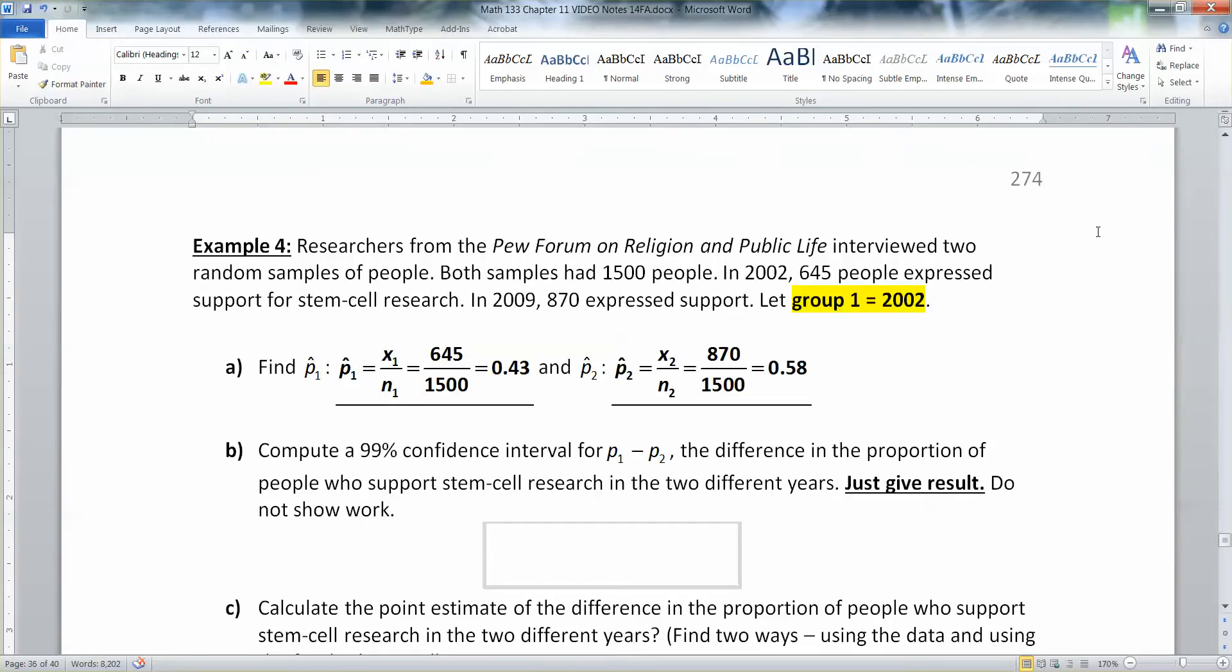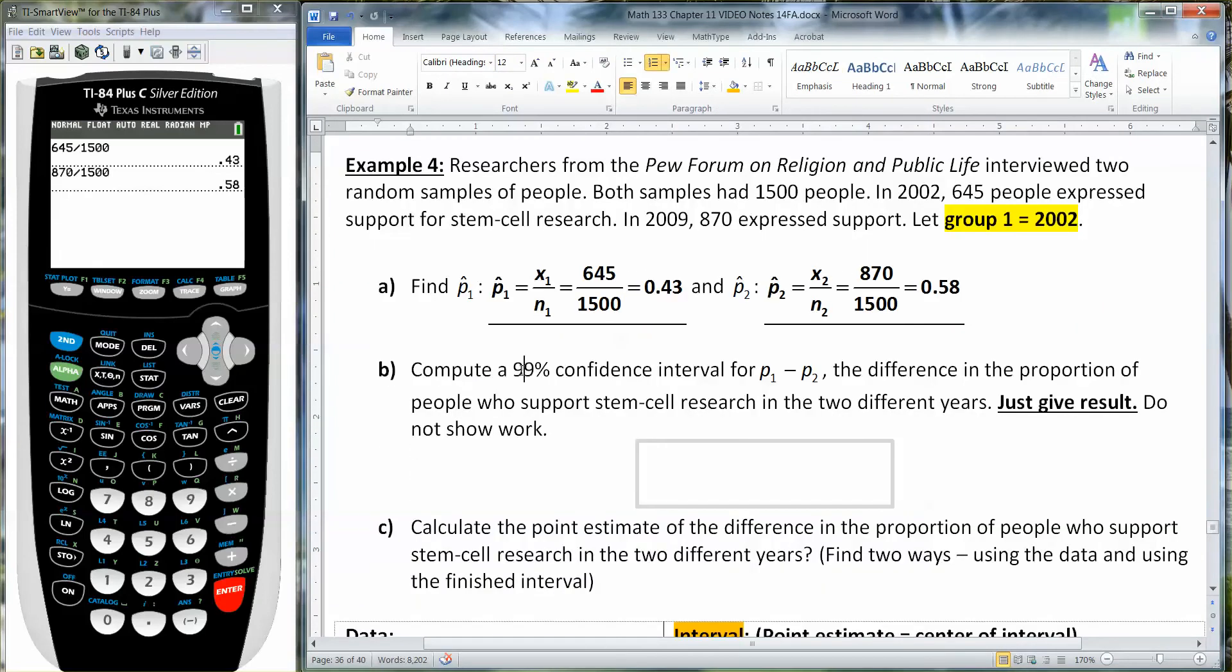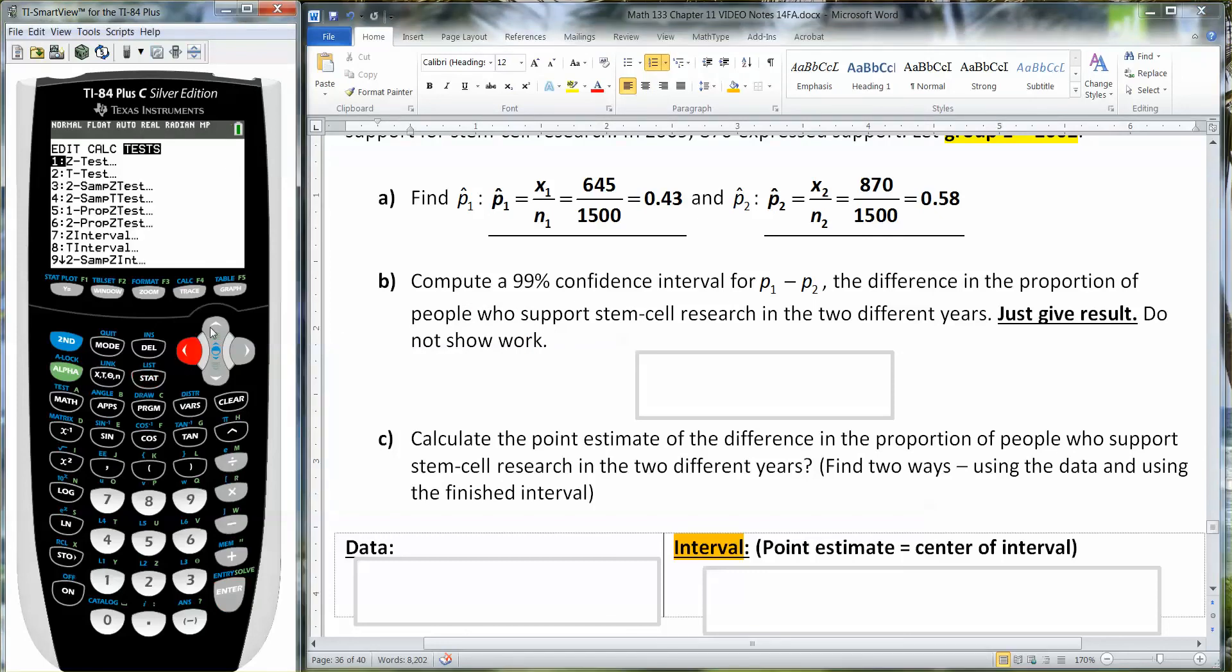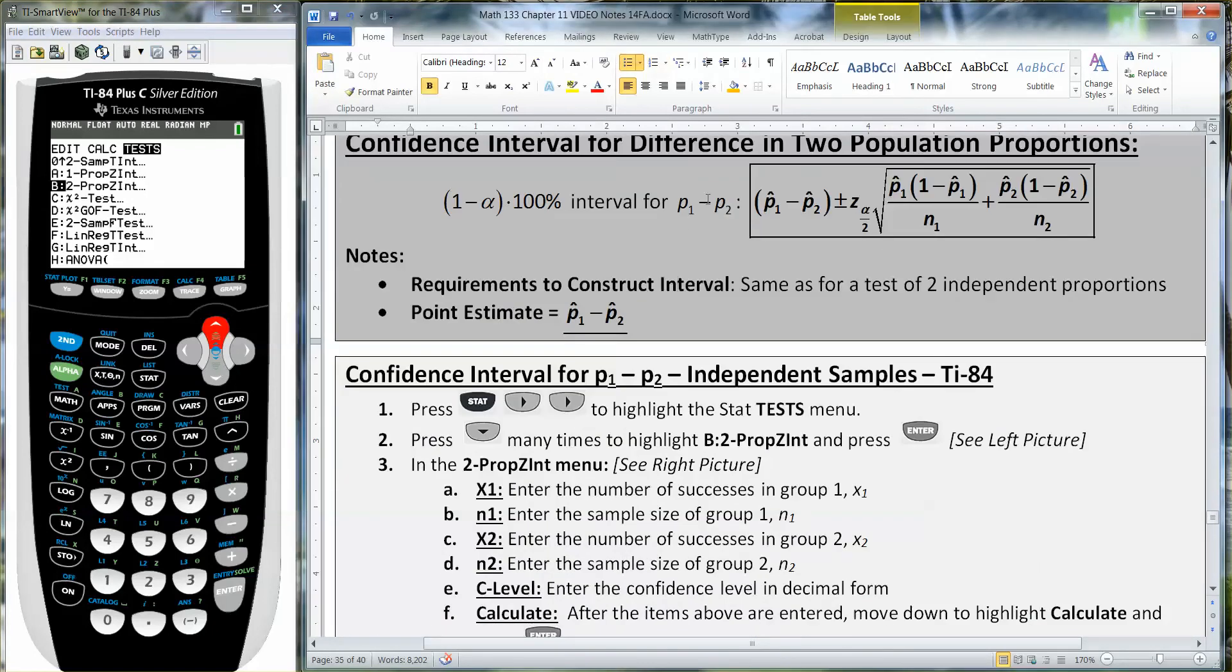So let's grab a calculator. And I'm going to make this here smaller so it can fit on the screen so we can see it. So I'm going to go to Stats, tests, and you want to look for, there it is, letter B, 2 prop z int. 2 because this is two groups, p1 and p2, right? Prop for proportions. That's why it's p's.